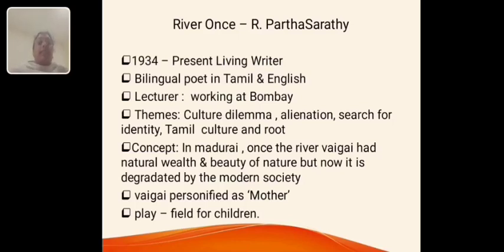The next poem is River Wands by R. Parthasarathy. He was born in the year 1934 and is a present living writer. He is a bilingual poet in Tamil and English and is working as a lecturer in Bombay. He discussed the concept of cultural dilemma, alienation, search for identity and Tamil culture and its roots. In River Wands, he discussed the situation of the Vaigai River in Madurai — how once it looked very wealthy and prosperous, but now how it has been degraded by modern society.